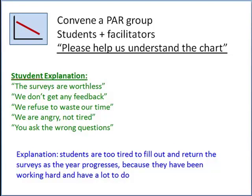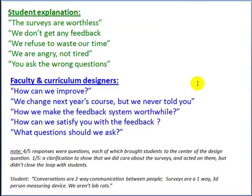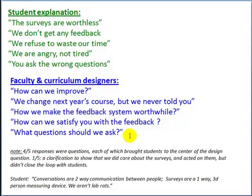This was quite different than the senior leader explanations. The faculty and curriculum designers then engaged in a dialogue with the students and asked, how can we improve? We told them that we changed next year's course based on their feedback, but we acknowledged that we never told them. We asked, how can we make the feedback system more worthwhile? How can we satisfy you with the feedback that you get? And what questions should we be asking? Four out of those five responses to the students were in the form of questions asking for more information. One of the students observed intelligently that conversations are two-way communications between people. Surveys are a one-way, third-person measuring device, and that they weren't lab rats.